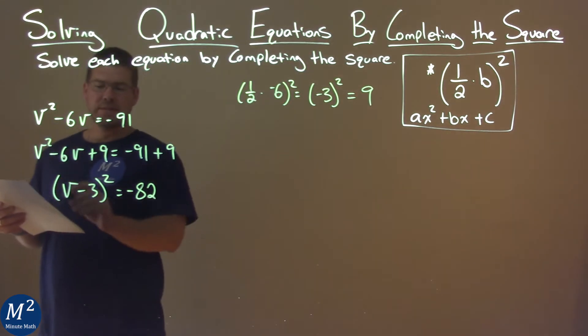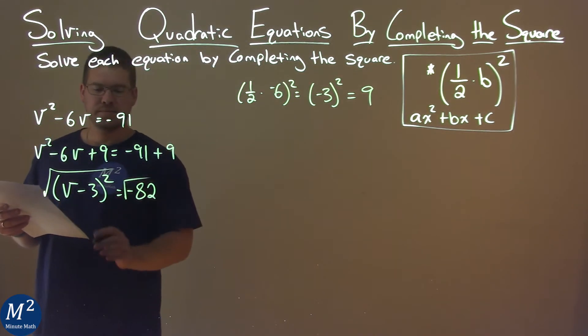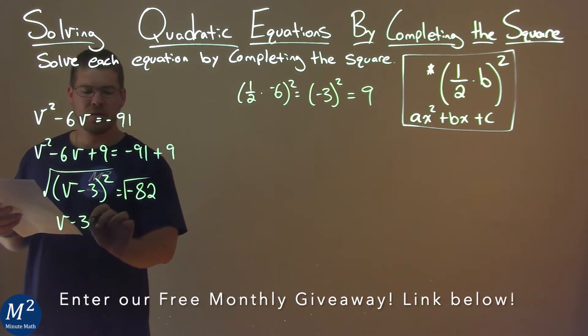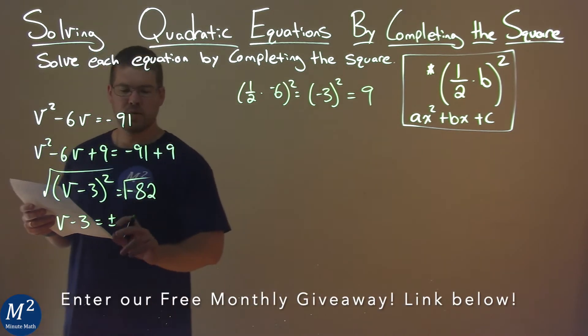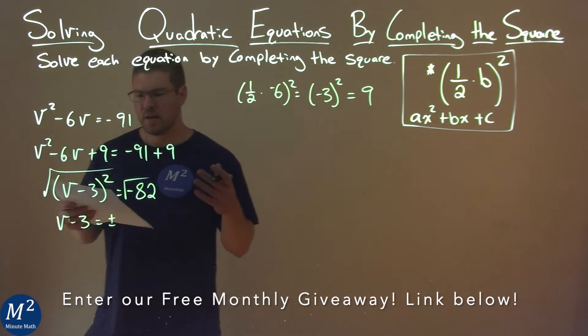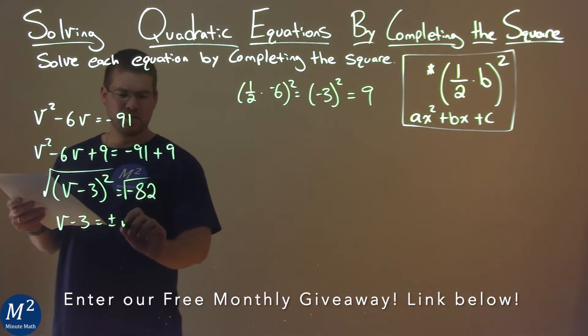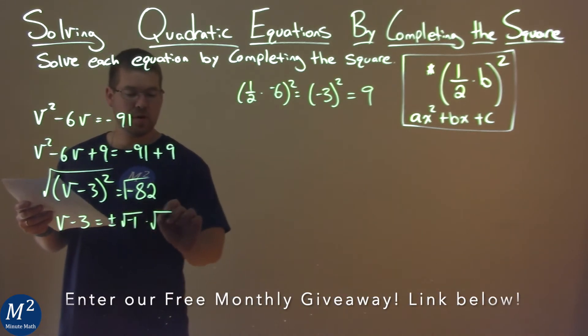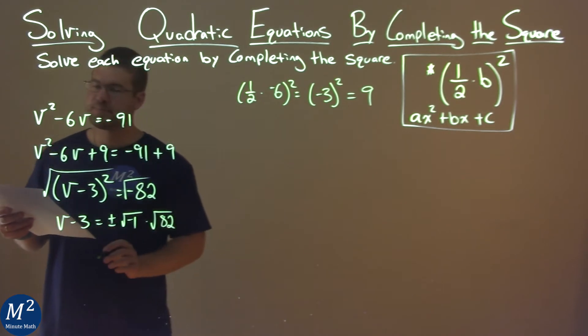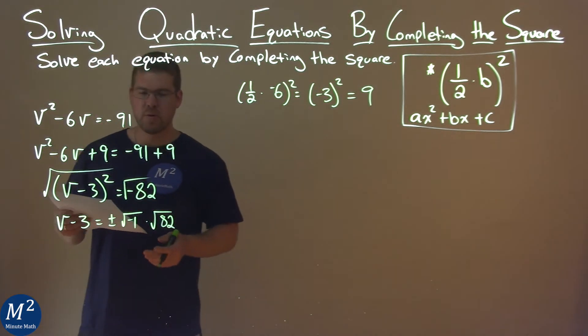So now from here we can take the square root of both sides of the equation and we have v minus 3 on the left plus or minus, don't forget it, and the square root of negative 82 which we can write to be the square root of negative 1 times the square root of positive 82.